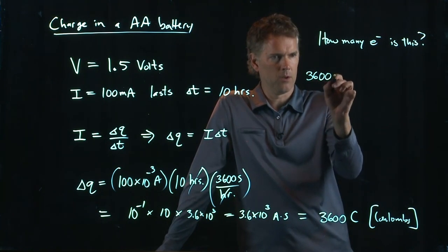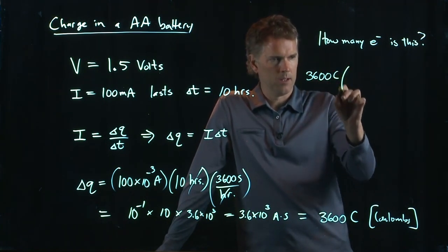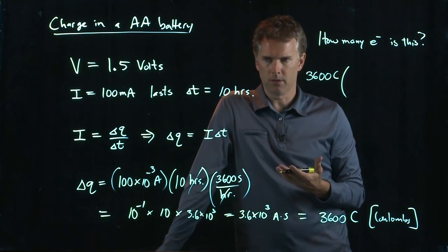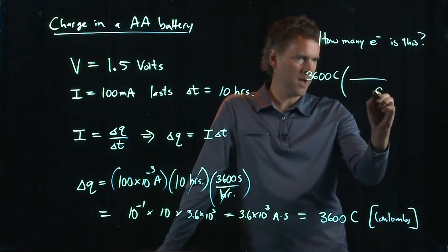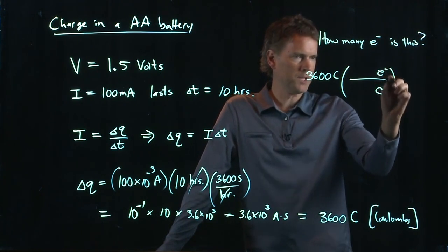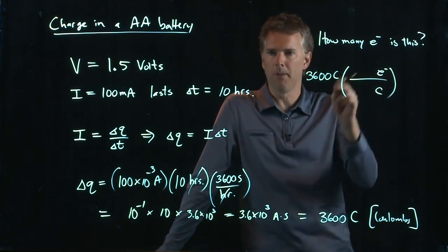Well, 3,600 coulombs, I want to convert that to electrons, so all I have to do is multiply by 1. So coulombs has to go in the bottom, electrons has to go in the top. And now I need to put a number here somewhere.